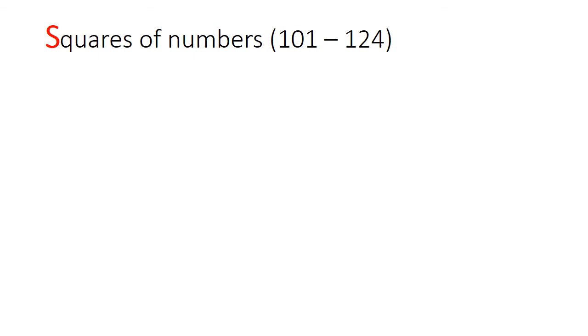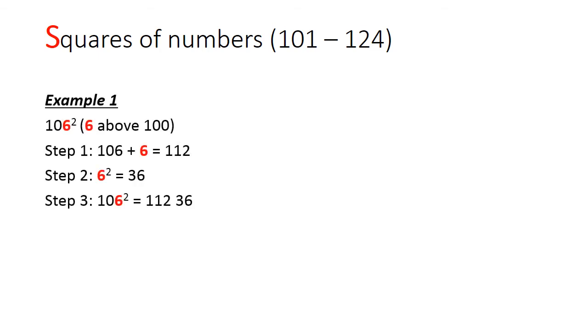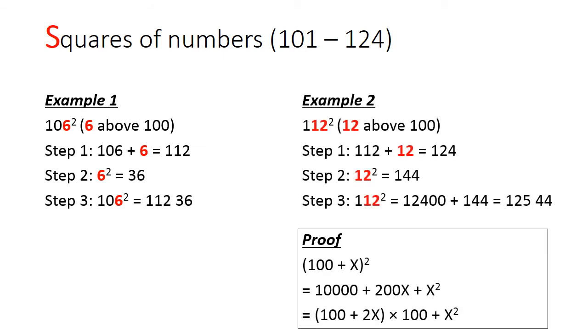The method for squaring numbers between 101 to 124 is to double its distance from 100, and to add the square of that distance. So in the example of 106, it is 6 above 100. We add an extra 6 to 106 to get 112. We square 6 to get 36. We put the two numbers together to get 11236. Here's the second example and a proof.